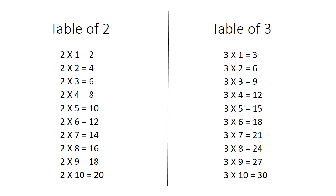Now let's revise again, table of 3. 3 ones are 3, 3 twos are 6, 3 threes are 9, 3 fours are 12, 3 fives are 15, 3 sixes are 18, 3 sevens are 21, 3 eights are 24, 3 nines are 27, 3 tens are 30.